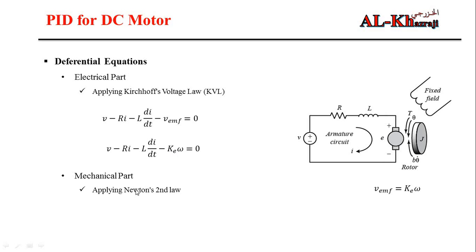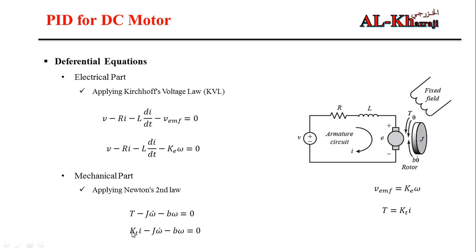For the mechanical part, we apply Newton's second law: the total torque equals zero. The torque generated from the current in the armature minus the inertia torque J·(dω/dt) minus the damping torque B·ω equals zero. The relationship between torque and current is the constant KT. Substituting, the mechanical equation becomes: KT·I - J·(dω/dt) - B·ω = 0.